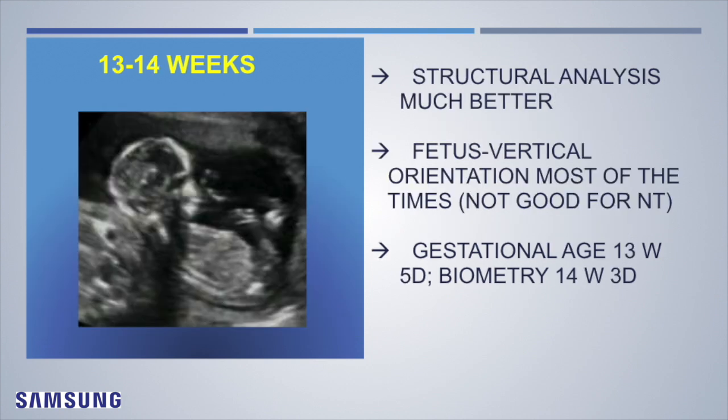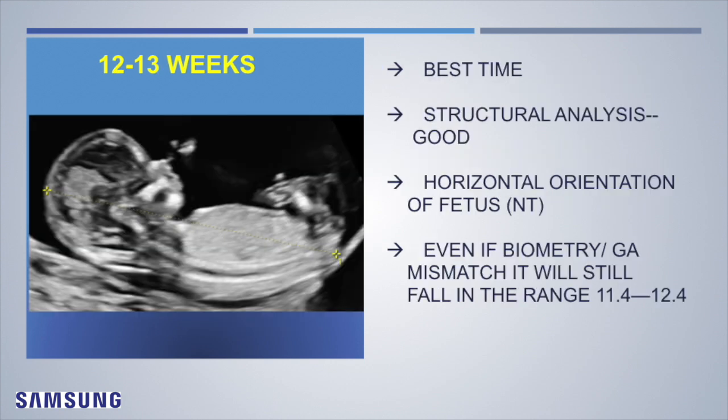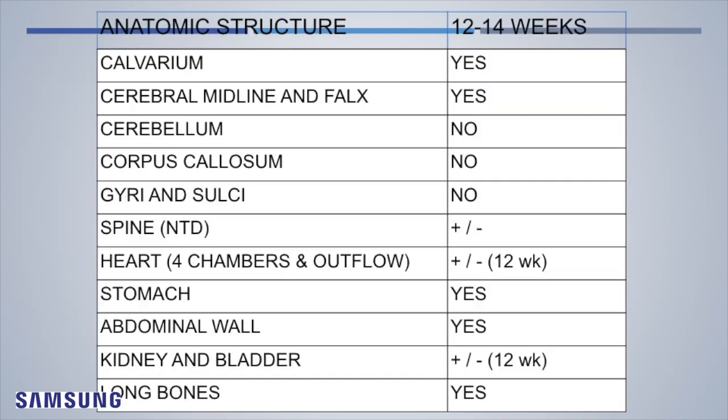If we scan between 13 to 14 weeks, structural analysis is much better, but the fetus sometimes remains in a vertical orientation throughout the scan, which is not good for NT. The gestational age may be 13 weeks 5 days but biometry may correspond to 14 weeks 3 days, and then you've lost that window. So the best time is between 12 to 13 weeks — structural analysis is good, horizontal orientation is obtained most of the time, and even a 3 to 4 day biometry difference will still fall within the 11 to 14 week range.